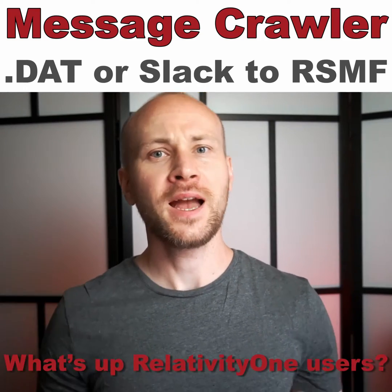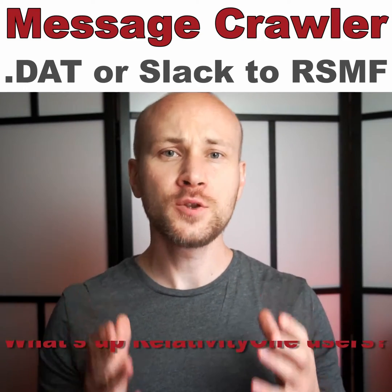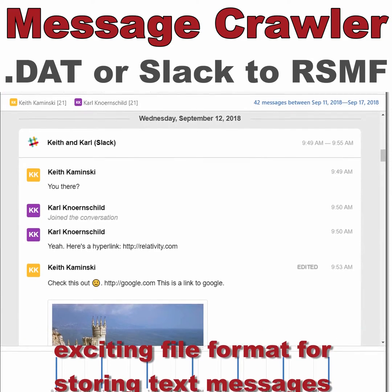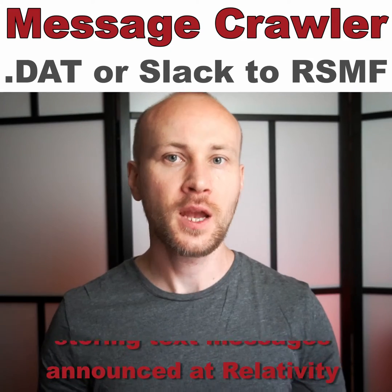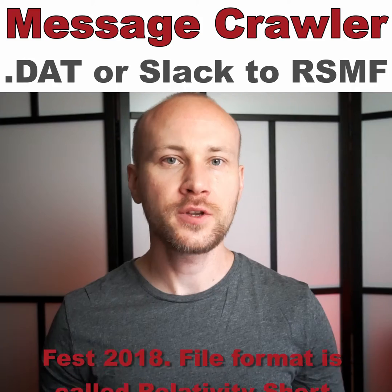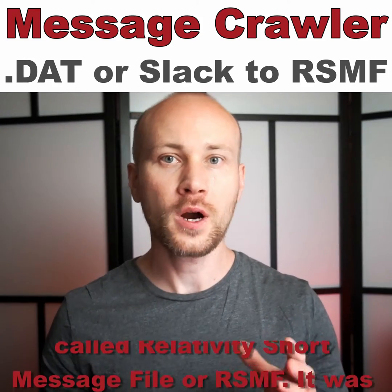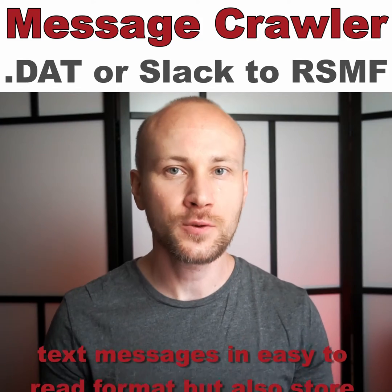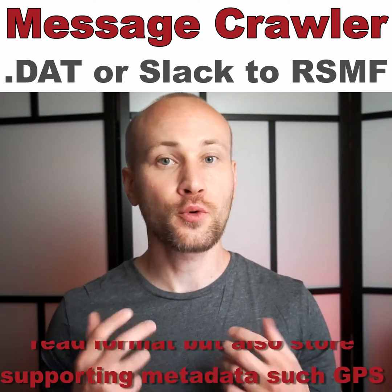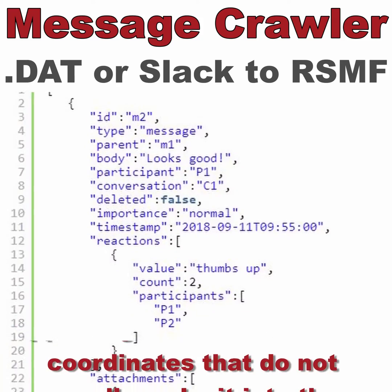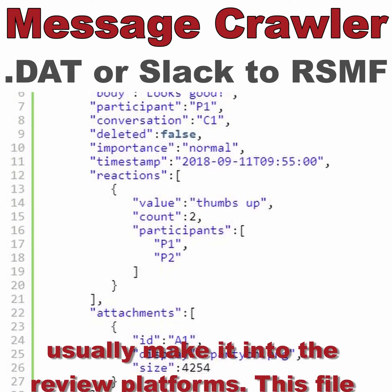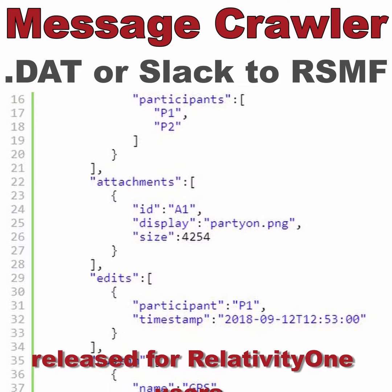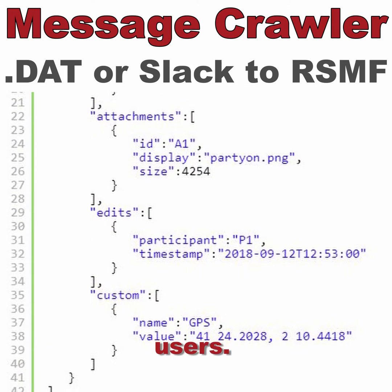What's up RelativityOne users? I hope you have seen the new and exciting file format for storing text messages announced at RelativityFest 2018. The file format is called Relativity Short Message File, or RSMF. It was promised not only to display text messages in an easy-to-read format, but also to store supporting metadata such as GPS coordinates that do not usually make it into review platforms. This file format has been finally released for RelativityOne users.